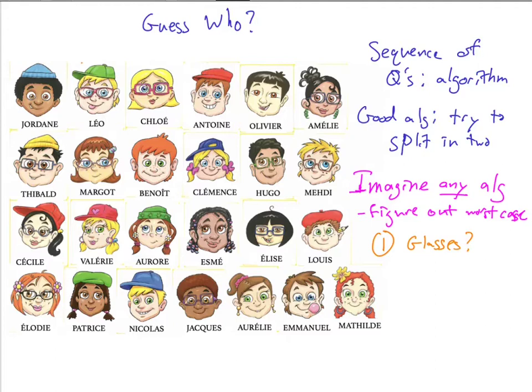There are 25 faces total. So we count: looks like 11 with glasses. That means there are 11 with glasses and 14 without glasses. In order to figure out the worst case, you always want to answer in a way that leaves the most number of possibilities. In this case, we would say 'no' in order to leave the most number of possibilities. Now the algorithm will only be considering the people that don't have glasses, and they might ask another question, like: does the person have earrings?